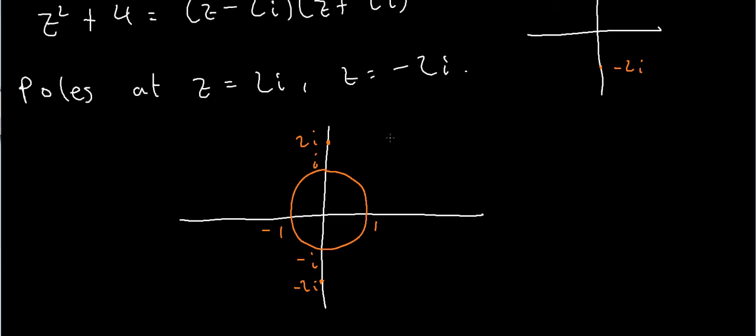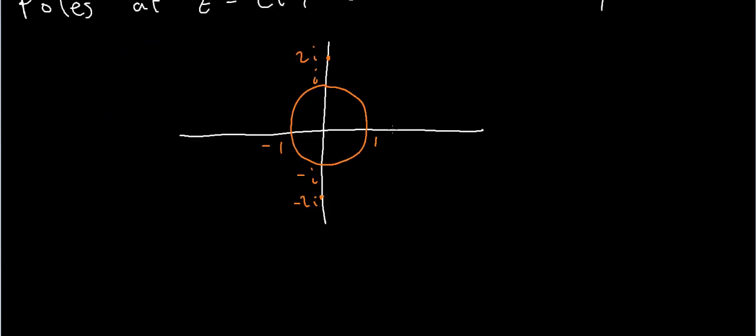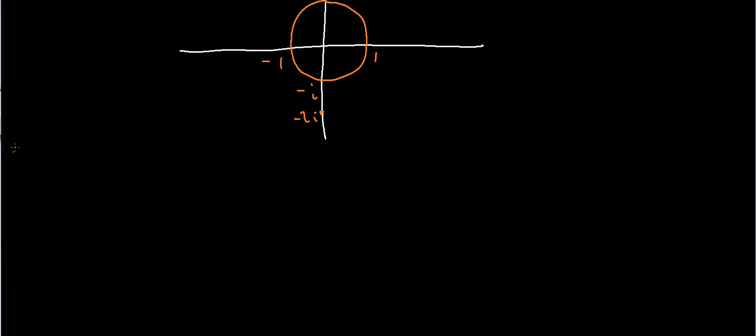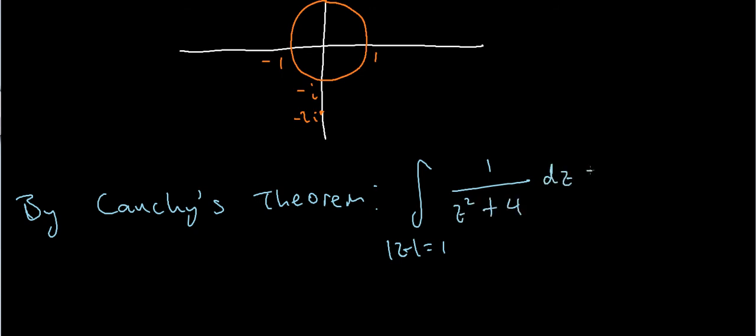So what does this say about the value of my integral? Well, since I've got no poles inside the contour c, mod z equals 1, then my integral just evaluates to 0 by Cauchy's theorem. So in other words, by Cauchy's theorem, since there are no poles inside my contour, this integral is just 0. So the integral over mod z equals 1 of 1 over z squared plus 4 dz is just 0.